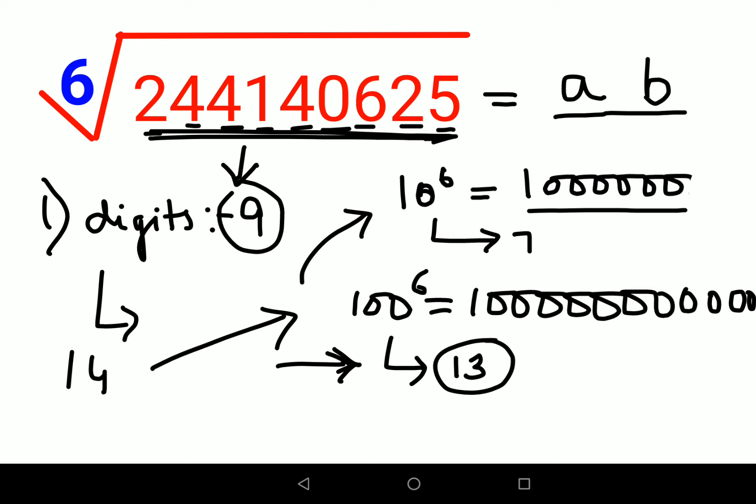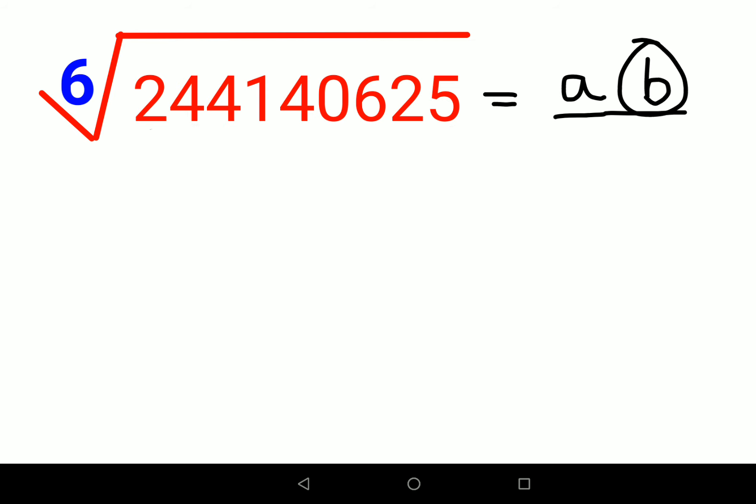Once you have figured this out, now we will start with working on the value of b. In order to find the value of b, we should always focus on the last digit of our question. Since the last digit is 5, we need to remember all these squares from 1 to 9 whose last digit is 5.